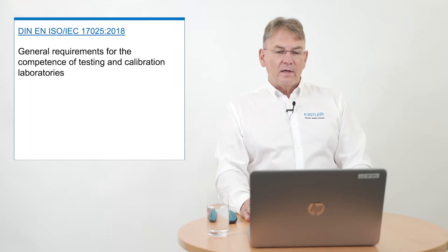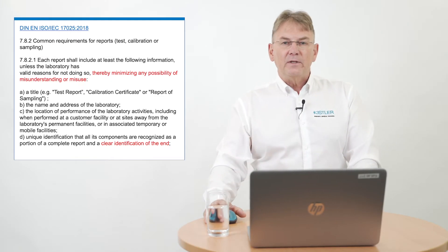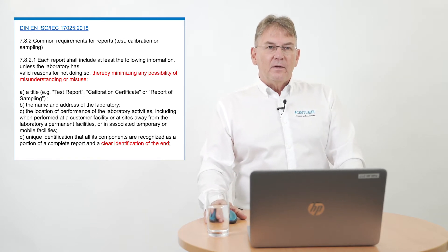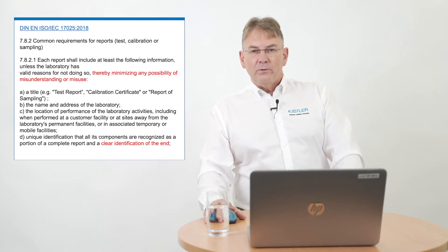Today's video session is about something very common: calibration certificates. You possibly have seen all kinds of calibration certificates. There is something new. When we talk about calibration certificates, we are talking about certificates for traceable calibrations, also called accredited calibrations. There is a norm behind that, called DIN EN ISO/IEC 17025:2018. This norm renews previous norms and there are some very major changes I want to show you and explain.